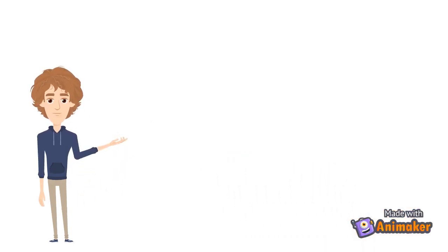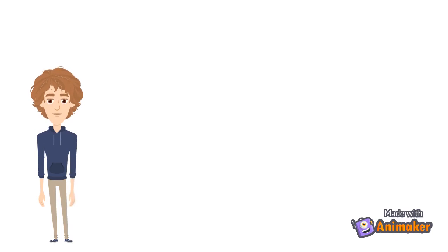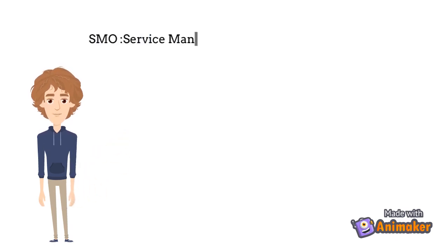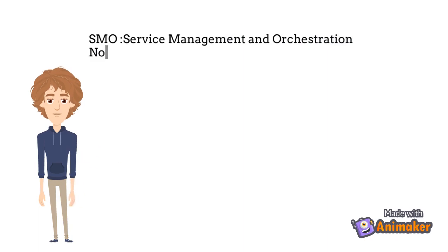In today's video, we will be using some abbreviations. Please have a look at the abbreviations below before we start the video. SMO stands for Service Management and Orchestration. Non-RT RIC stands for Non-Real-Time RAN Intelligent Controller.